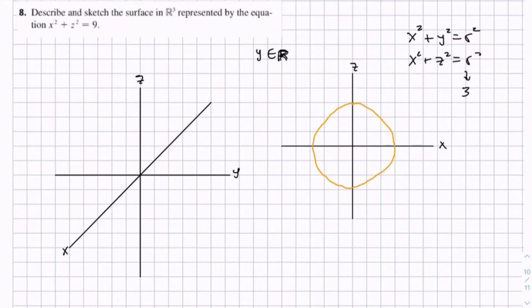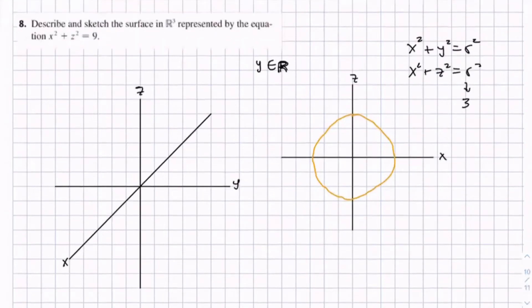And now if we transpose this into our 3D coordinate plane, we have a circle on our x-z plane with radius 3, so it looks something like this.